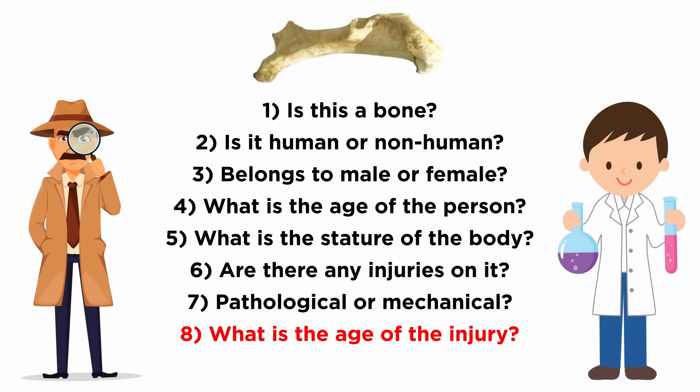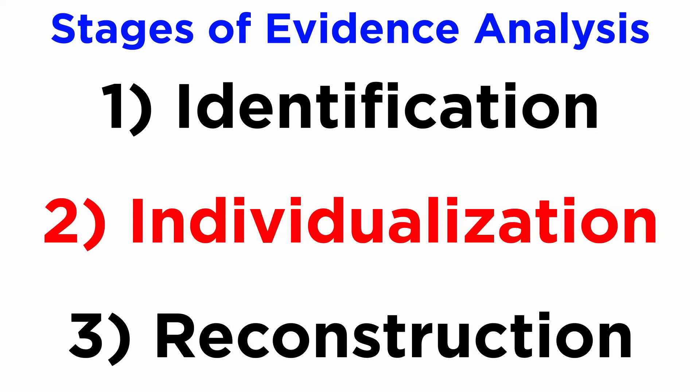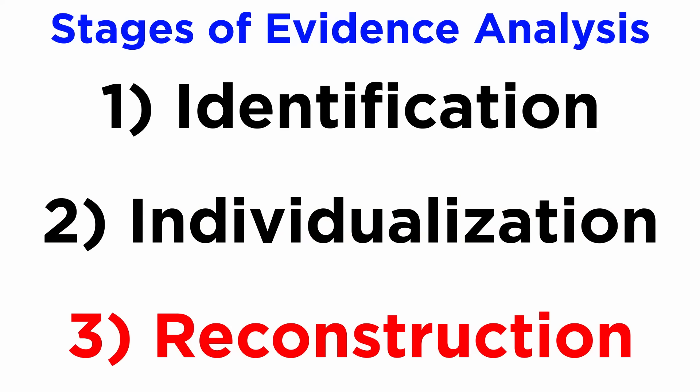Continuing the bone evidence questions: 8. If there is an injury, what could be the age of the injury? 9. What could be the time since death, based on the decaying of the bone? Broadly speaking, evidence analysis includes three stages: 1. Identification, 2. Individualization, and 3. Reconstruction. We need to understand the characteristics of the evidence before learning about these stages.